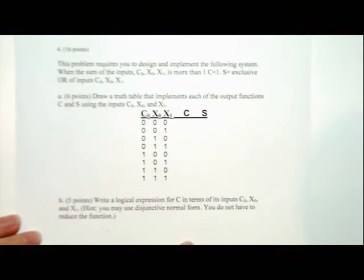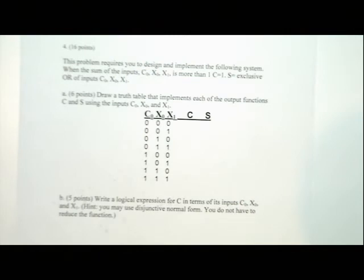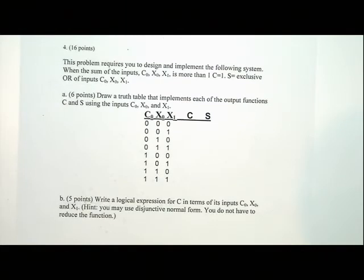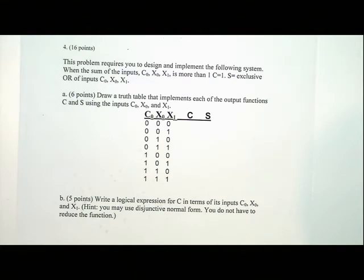Problem number four is a circuit design problem. I mentioned in class that I wouldn't give you a problem with four variables, and the TAs made your exam and they might have put four, but it's not too horrible — I've checked it myself and worked it. You won't have more than seven terms total. You'll have to read the paragraph at the beginning — it says when the sum of the inputs is more than one, then C equals one. And we want S to be the exclusive OR of the inputs C0, X0, and X1. What circuit is this? It's an adder — we did it in class, and there's also a truth table for it in packet two.